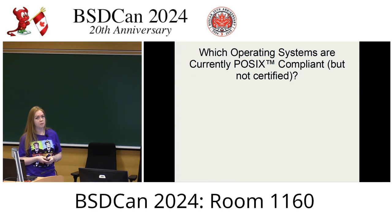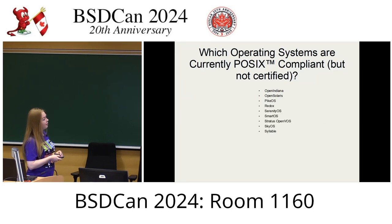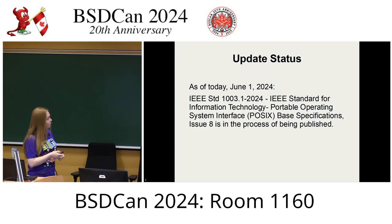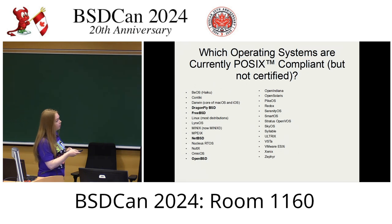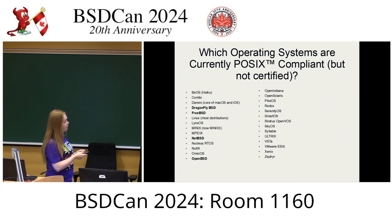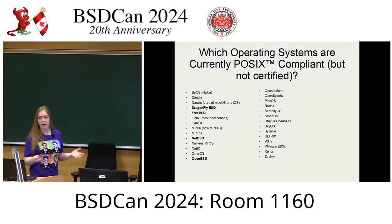Which operating systems are currently POSIX compliant? This is a very different list from the certified list. It includes the Illumos systems — such as OpenIndiana and SmartOS — which are POSIX compliant but not certified. And of course all of the BSDs: Dragonfly, FreeBSD, NetBSD, and OpenBSD — all compliant, but not certified.